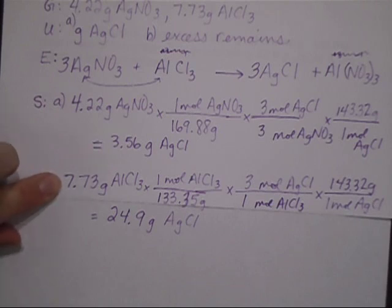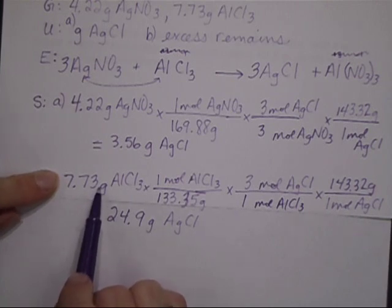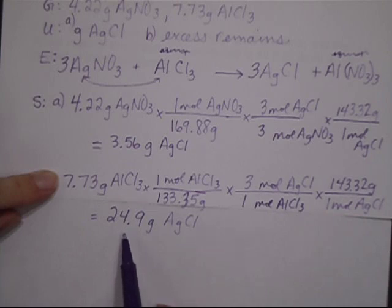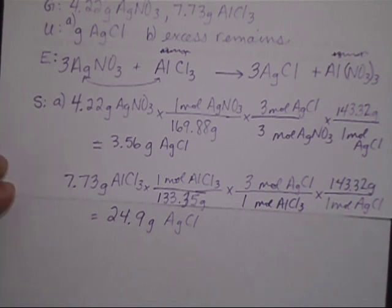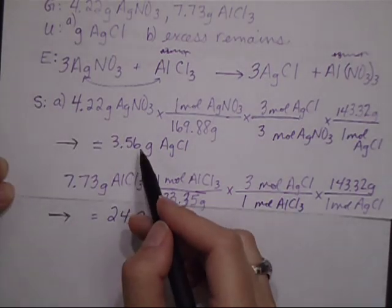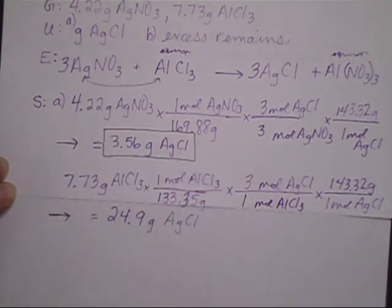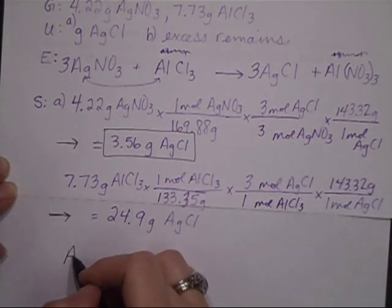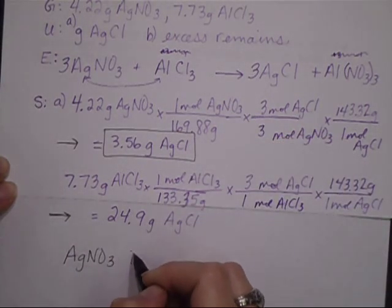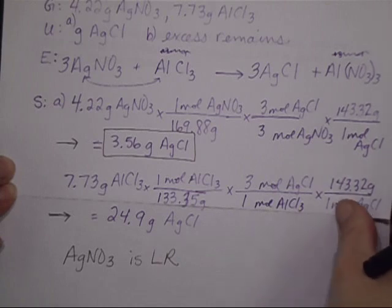So to reiterate, this represents if I start with 7.73 grams of aluminum chloride and I have plenty of silver nitrate, I can make 24.9 grams of AgCl. To figure out how much I really can make I have to choose the one that is of the lesser value. So my options are here or here. Obviously 3.56 is significantly less than the other one, which tells me that my silver nitrate is my limiting reactant and that from that I can make 3.56 grams of silver chloride.